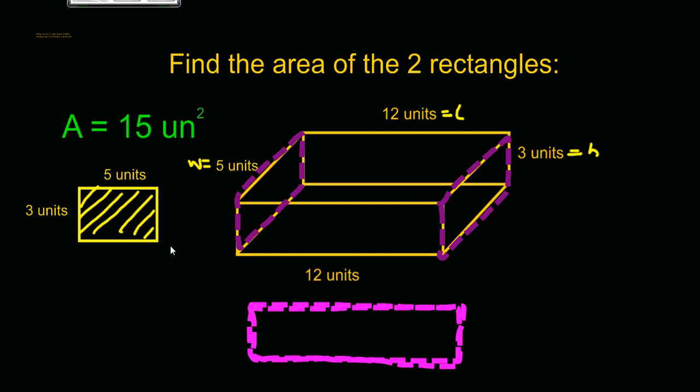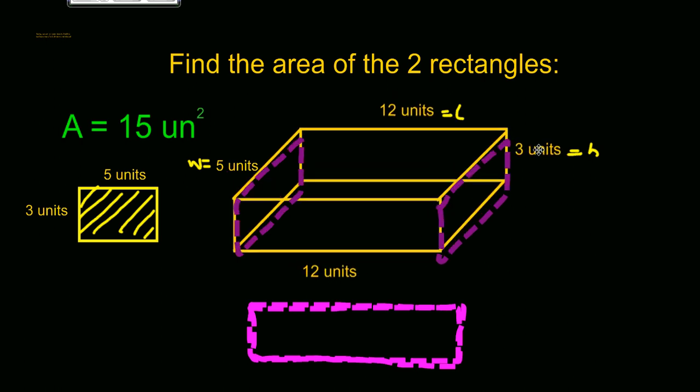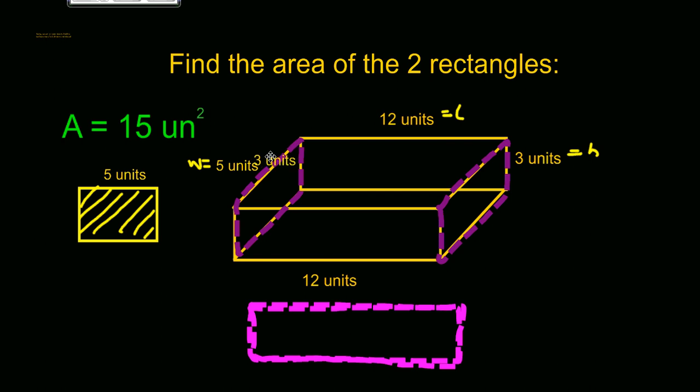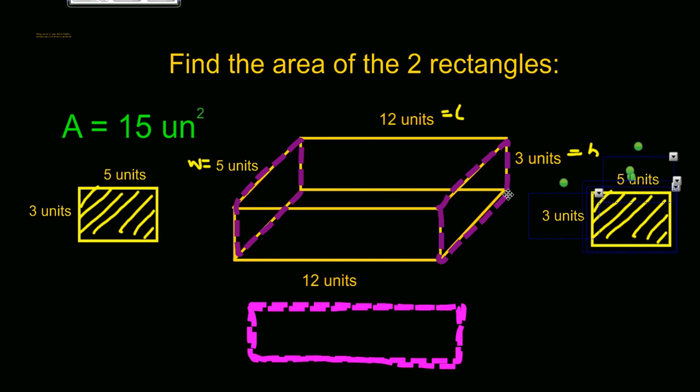Now we have to also recognize that if we have this rectangle over here, it's going to be exactly the same or identical over here. As a matter of fact, that's actually how we realized that if this side over here was three, then this side right here would also be three, the height. So this is an identical figure that would be over here. And when we add those two together, we have a total of two times 15, which would be 30 units squared.